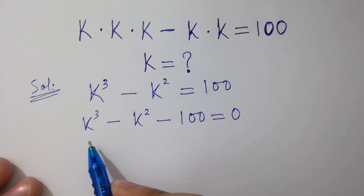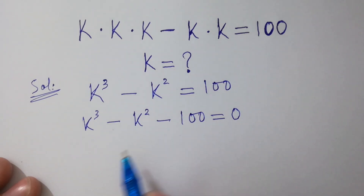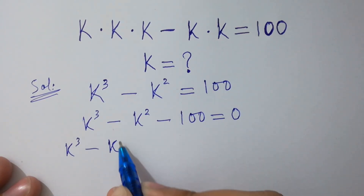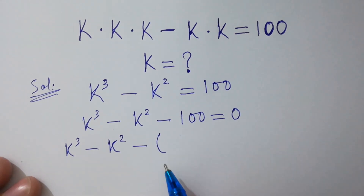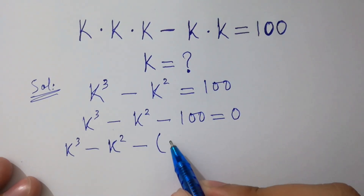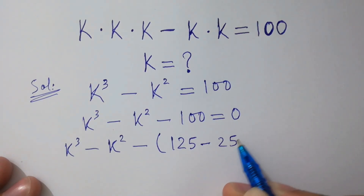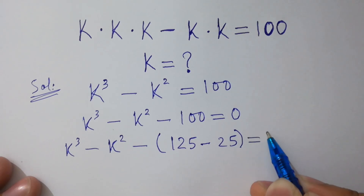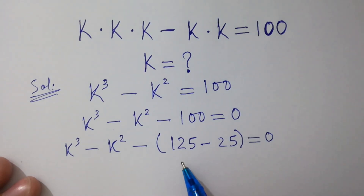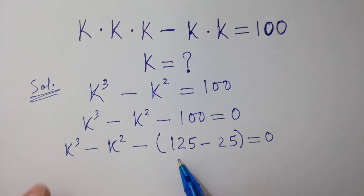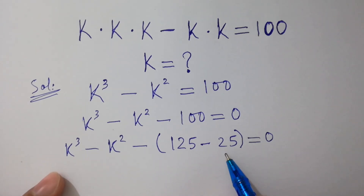To solve this, we need matching cube and square terms. Notice that 100 is the same as 125 minus 25, because 125 minus 25 equals 100. And 125 is 5 cubed, and 25 is 5 squared. I hope you understood.